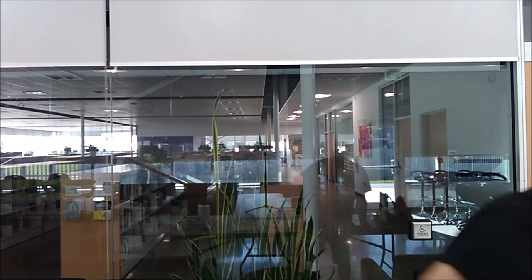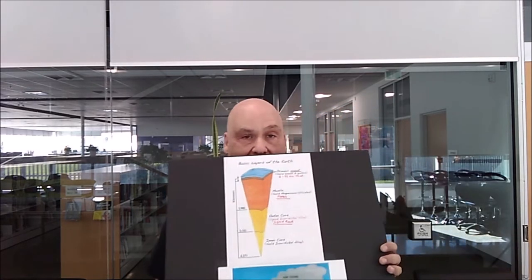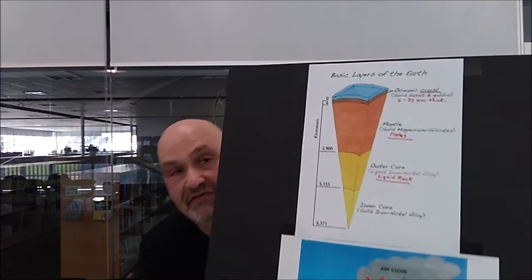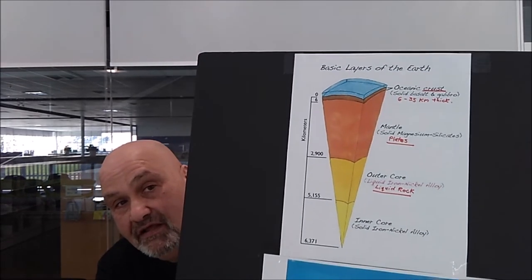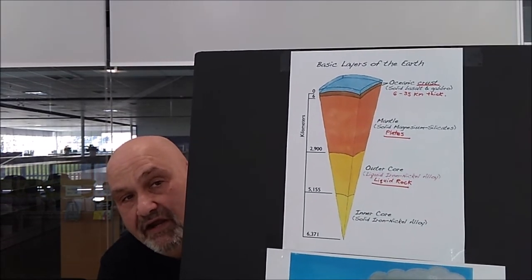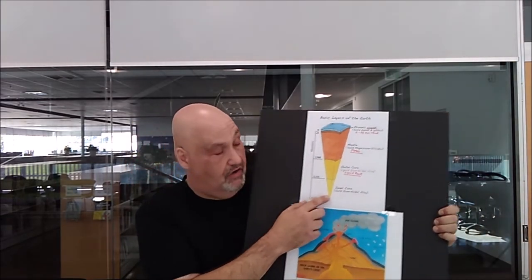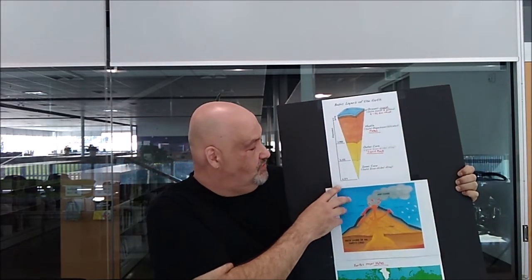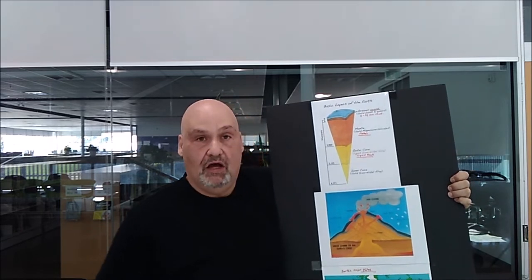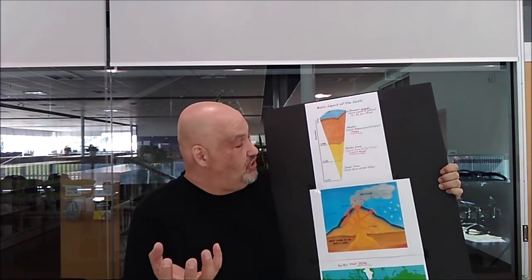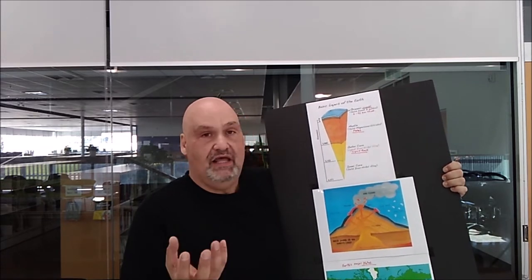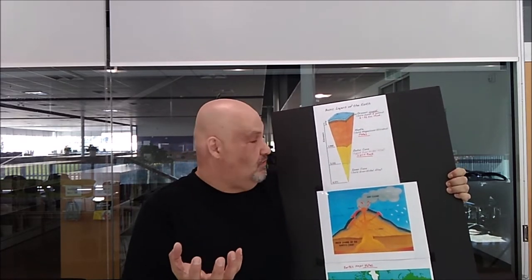Before we talk about volcanoes and how they're formed, we have to talk about what the earth is made up of. If you see my chart at the top, that's the four main layers of the earth. At the very center of our earth, 6,371 kilometers down, we have an inner core — it's called the inner core — and it's a solid iron and nickel mass, a big ball of steel.